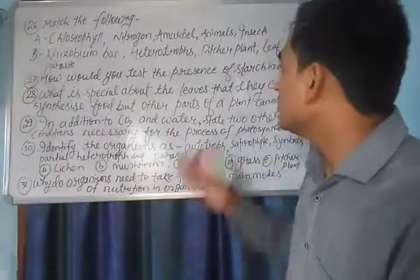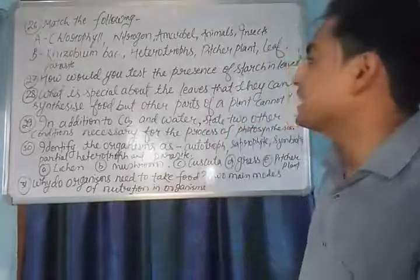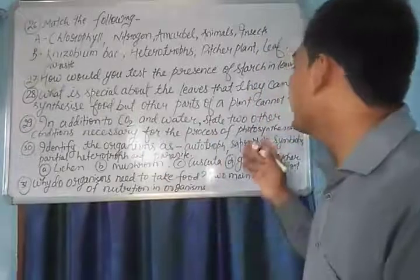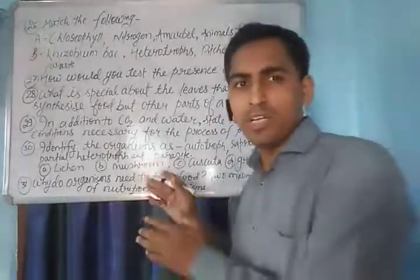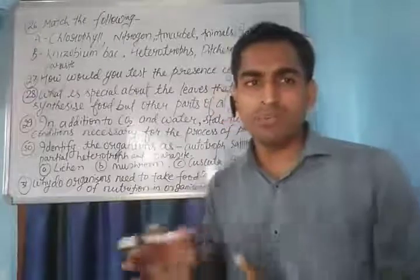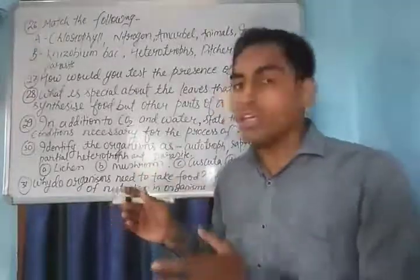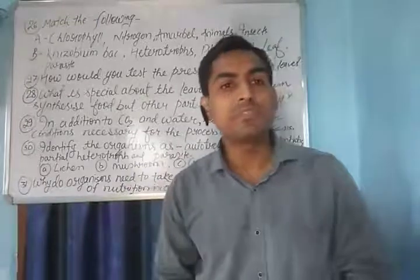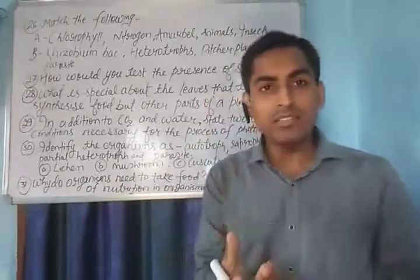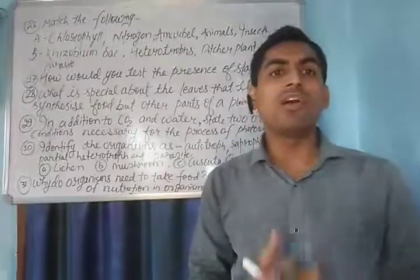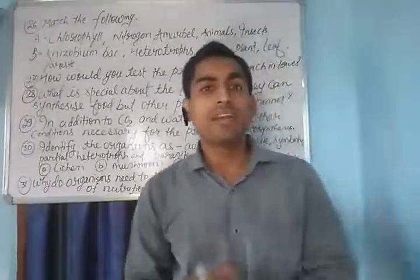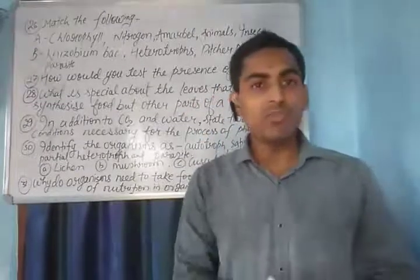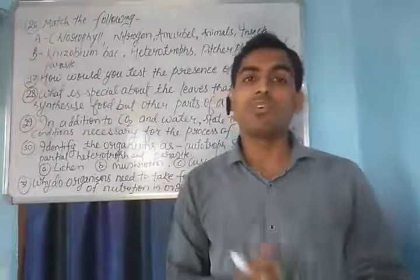Question number 28: What is special about leaves that they can synthesize food but other parts of a plant cannot? Plants make food with the help of leaves as leaves contain a green pigment called chlorophyll that traps sunlight and converts solar energy into chemical energy for the formation of food.